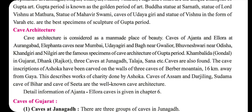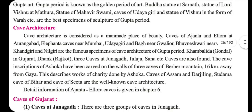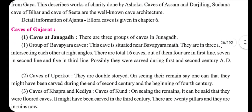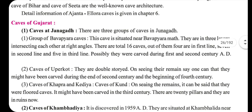Various other caves are also notable. The cave inscriptions of Ashoka have been carved on the walls of three caves of Barabar mountain, 16 km away from Gaya. These inscriptions describe the charity that was done by King Ashoka. Further explanation is given in chapter 6.